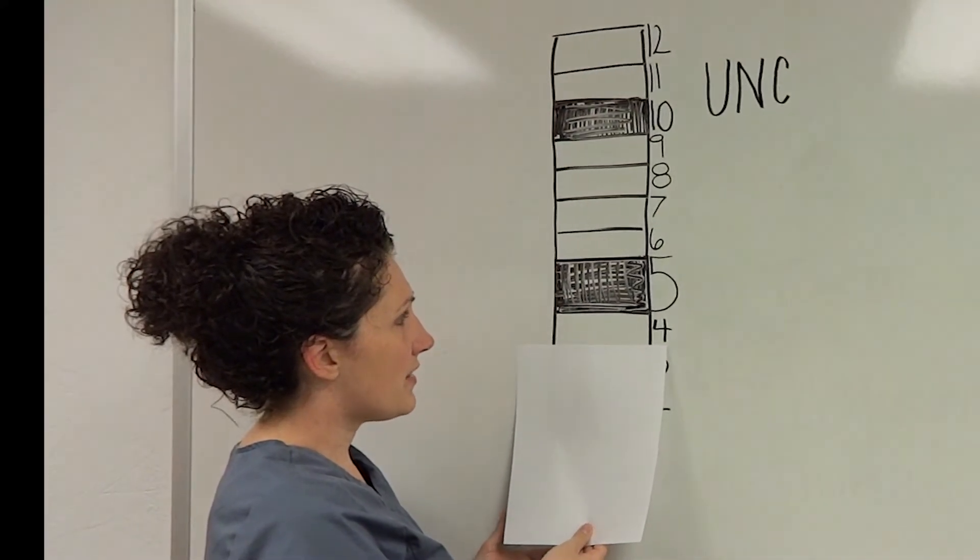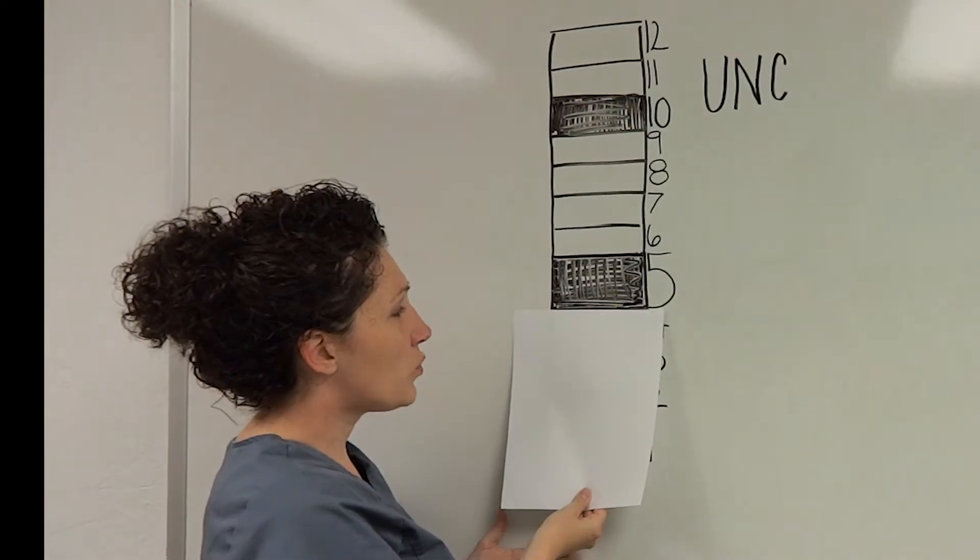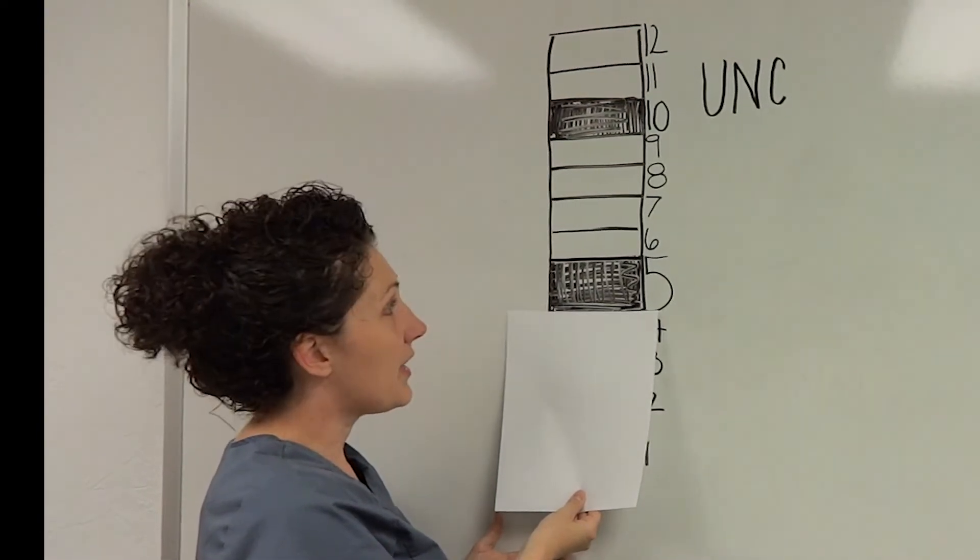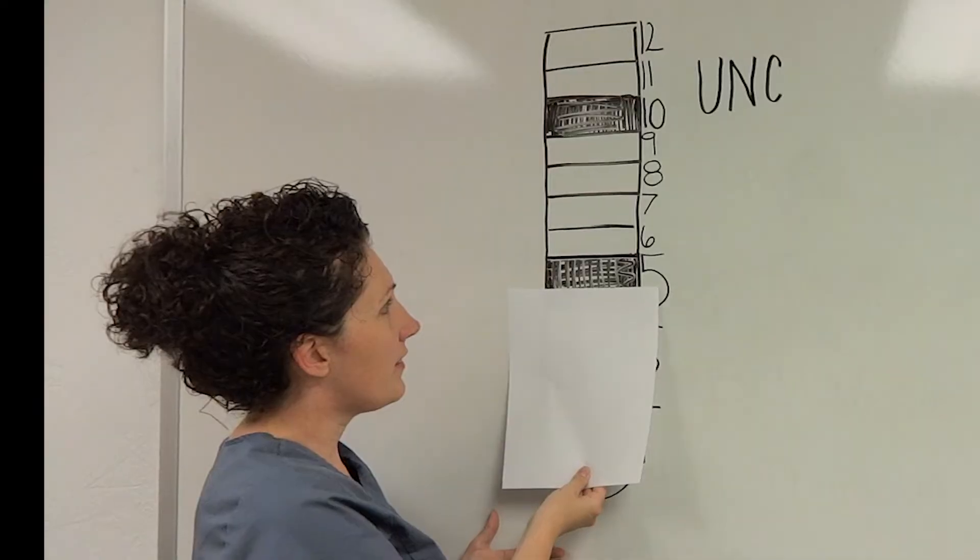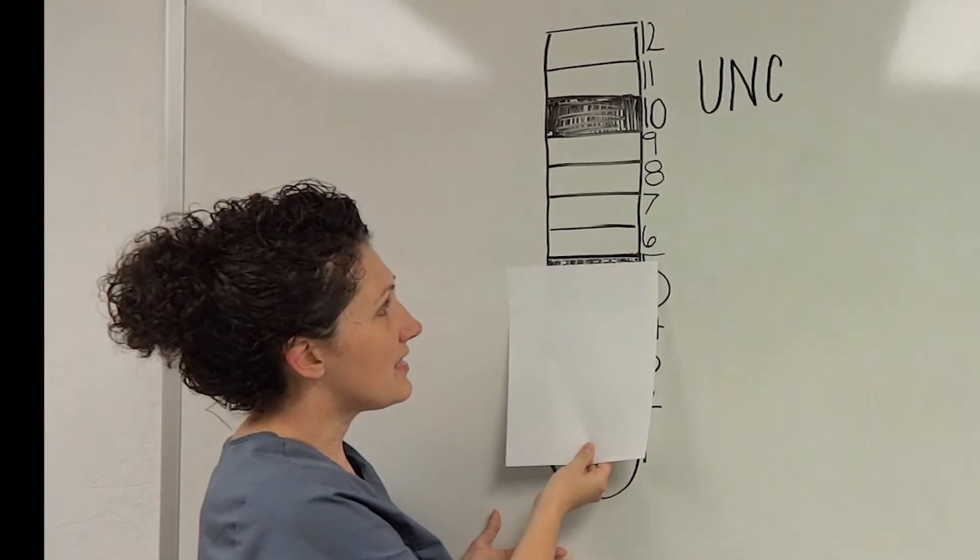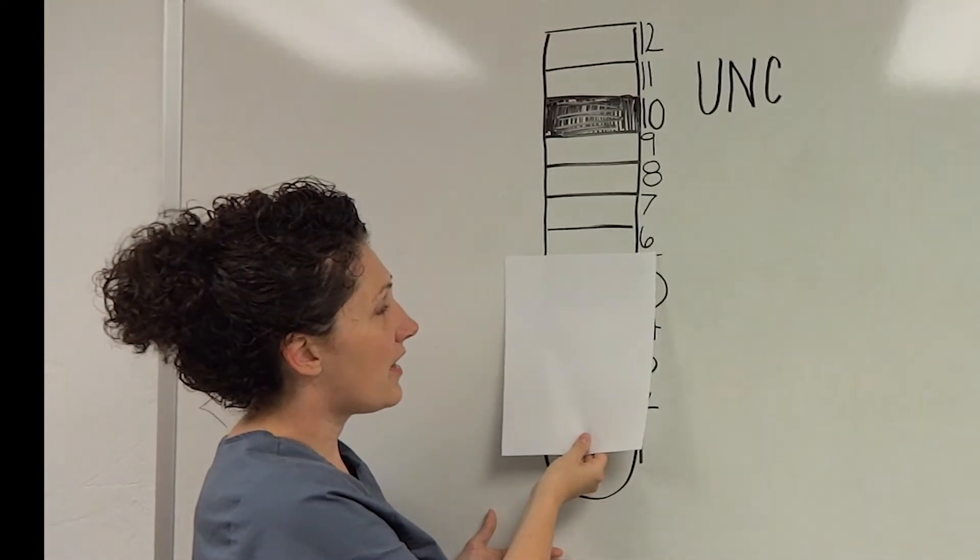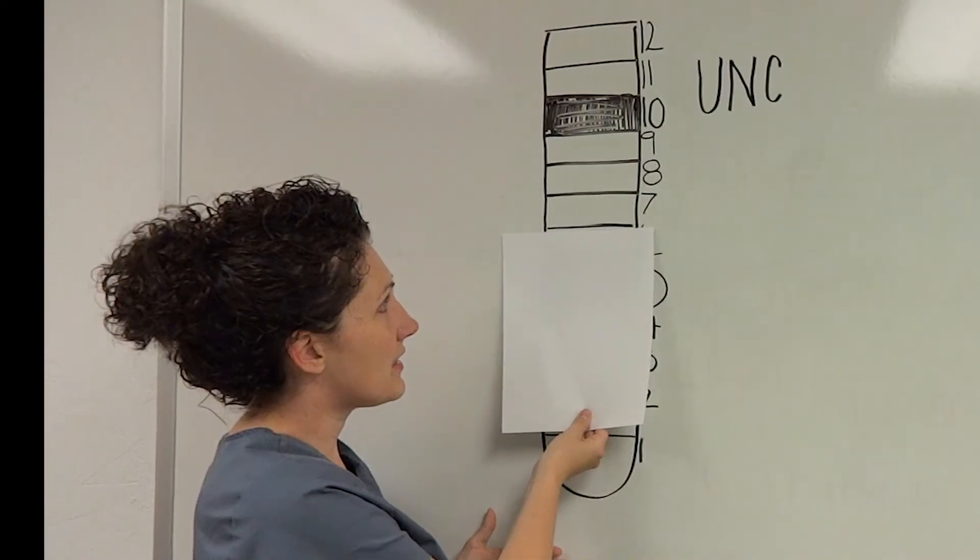Once this black line is covered, this is the four area. Once you reach the bigger black line, it becomes a five millimeter pocket. The top of that black line is still at a five. Once that black line is covered, you have a six.